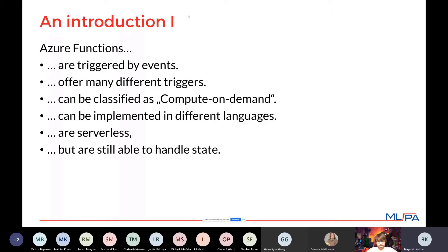I like to use Azure Functions as serverless instances, but — and this sounds like a bit of a contradiction — Azure Functions are able to handle state. Meaning you can pass certain variables, certain values, certain settings from one execution to the next, even though you don't have a server on which you store that state. I'll talk a bit about that as well.